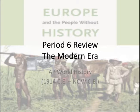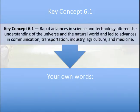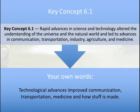We're going to kick things off with Key Concept 6.1, which says: 'Rapid advances in science and technology altered the understanding of the universe and the natural world and led to advances in communication, transportation, industry, agriculture, and medicine.' Go ahead and pause and put that into your own words. Here's what I came up with: technological advances improve communication, transportation, medicine, and how stuff is made.